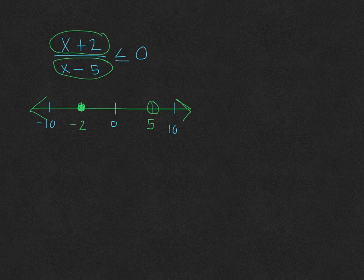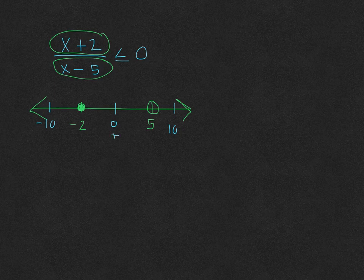So if I start off with 0, 0 plus 2 is a positive. 0 minus 5 is a negative 5. A positive over a negative is negative.